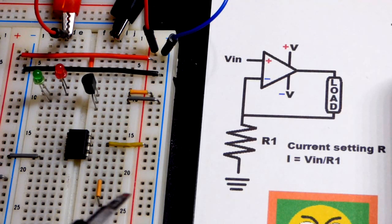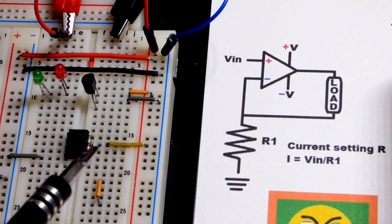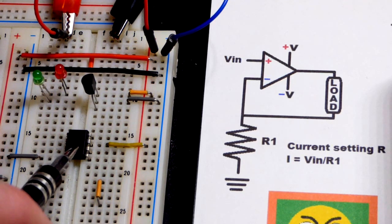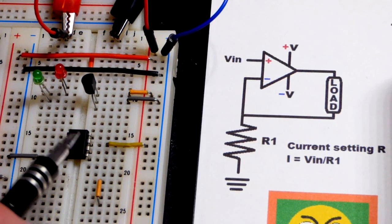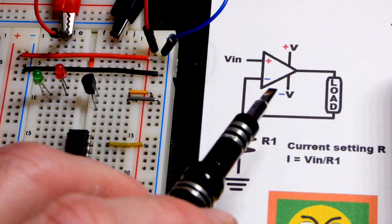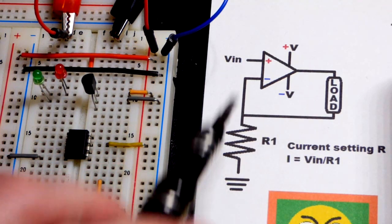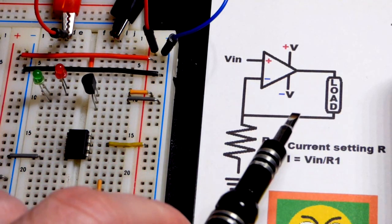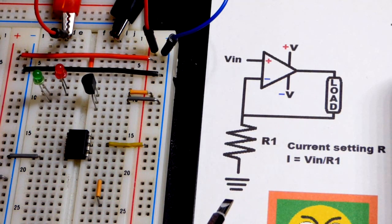In this video we're going to put together a current source circuit using the 741 op amp. We'll wire it up and give it a voltage, and based on that voltage we'll have a certain amount of current going through the load and the resistor.